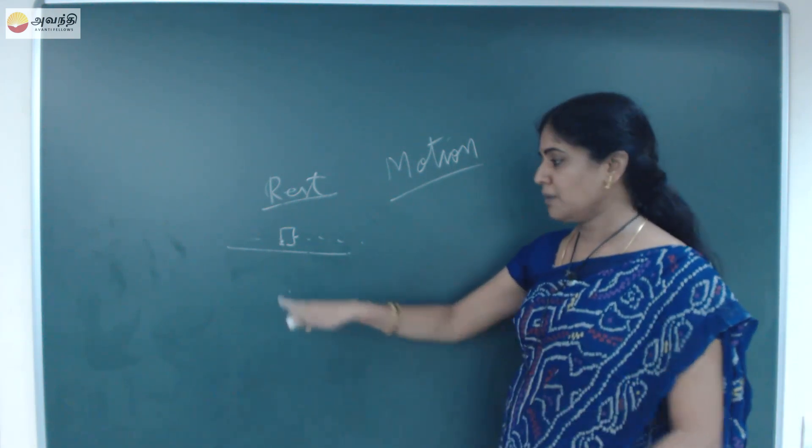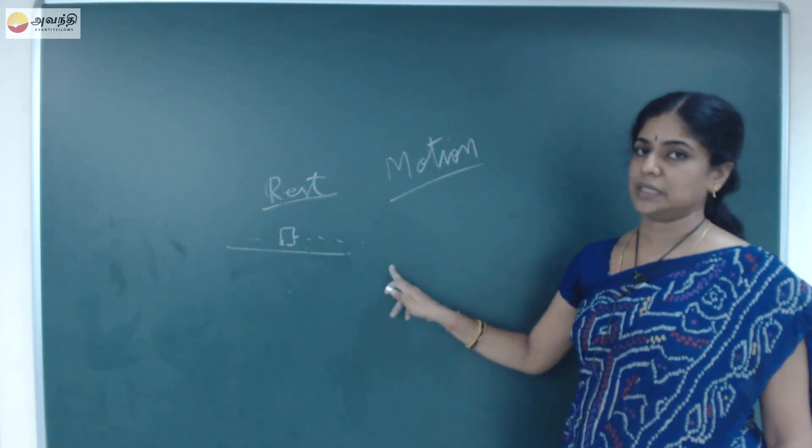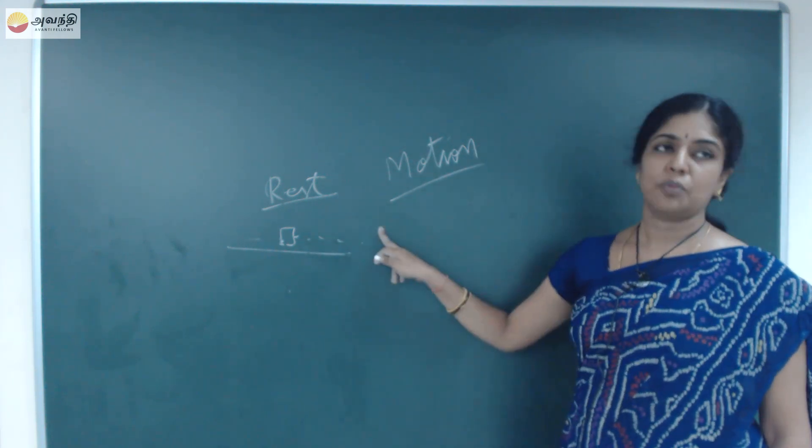When unbalanced forces are acting on an object, the object can be able to move from one place to another place. In this way, I can describe this motion of an object.